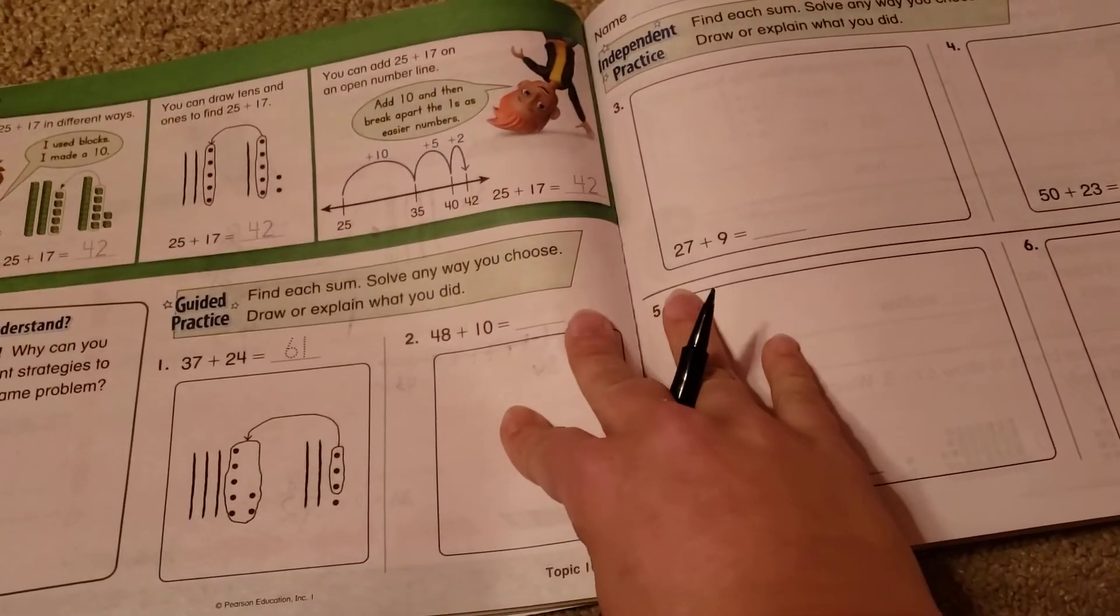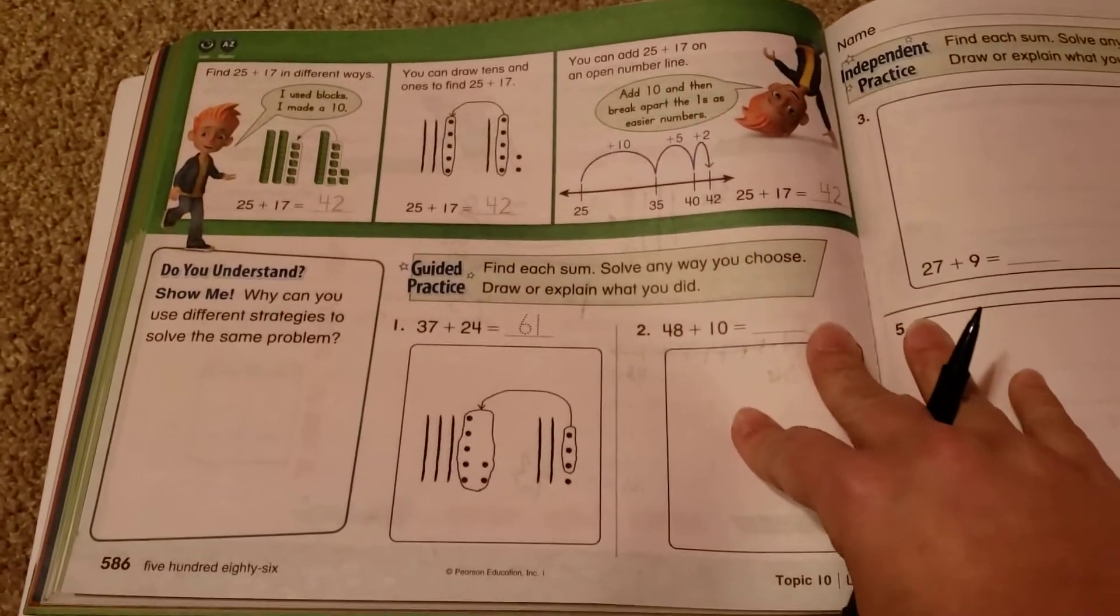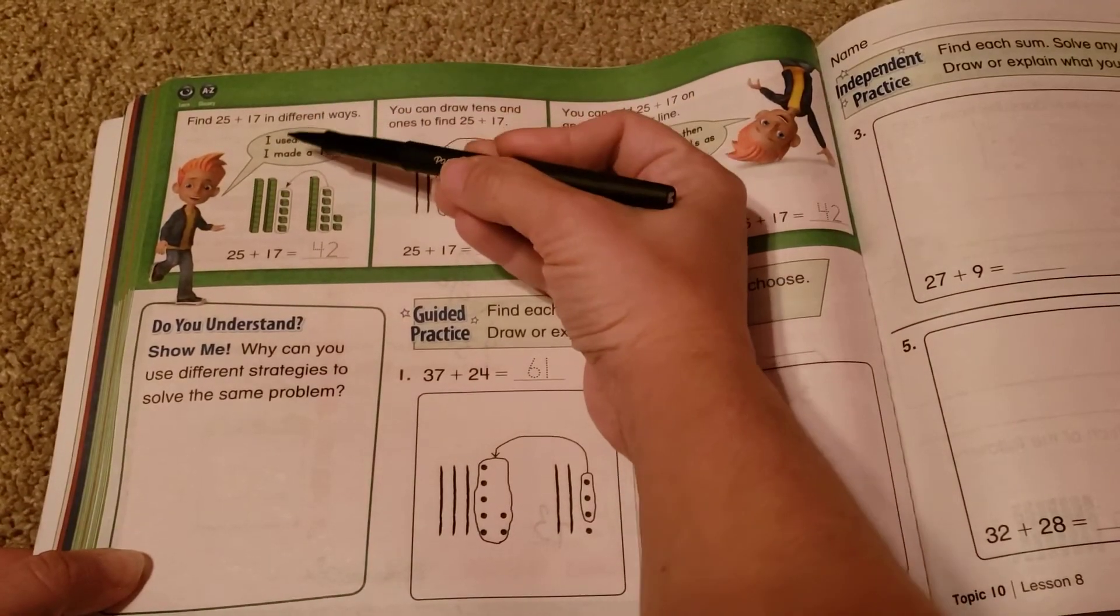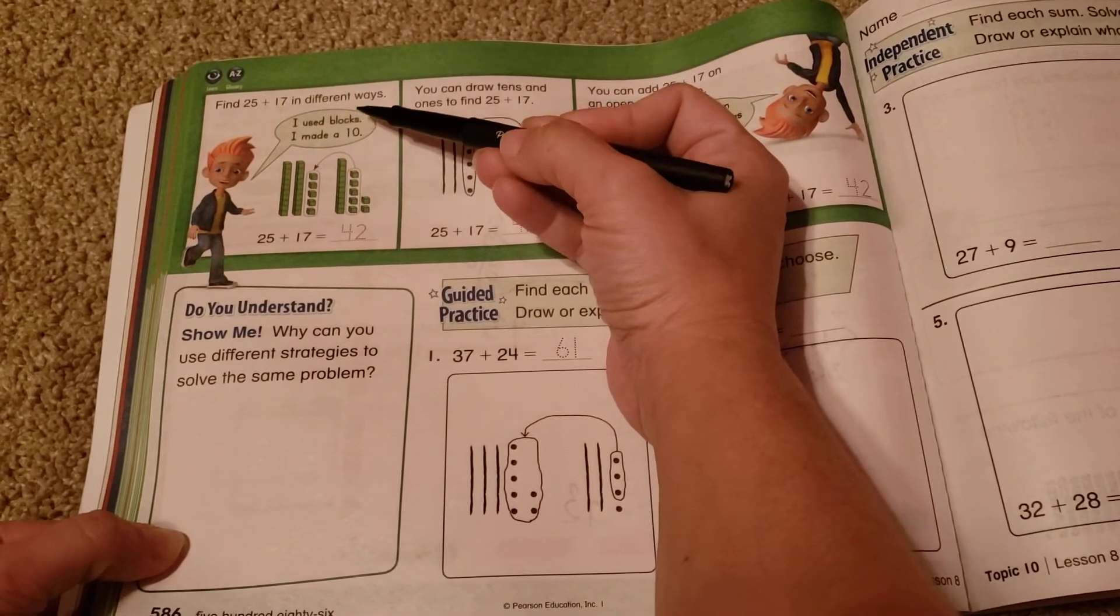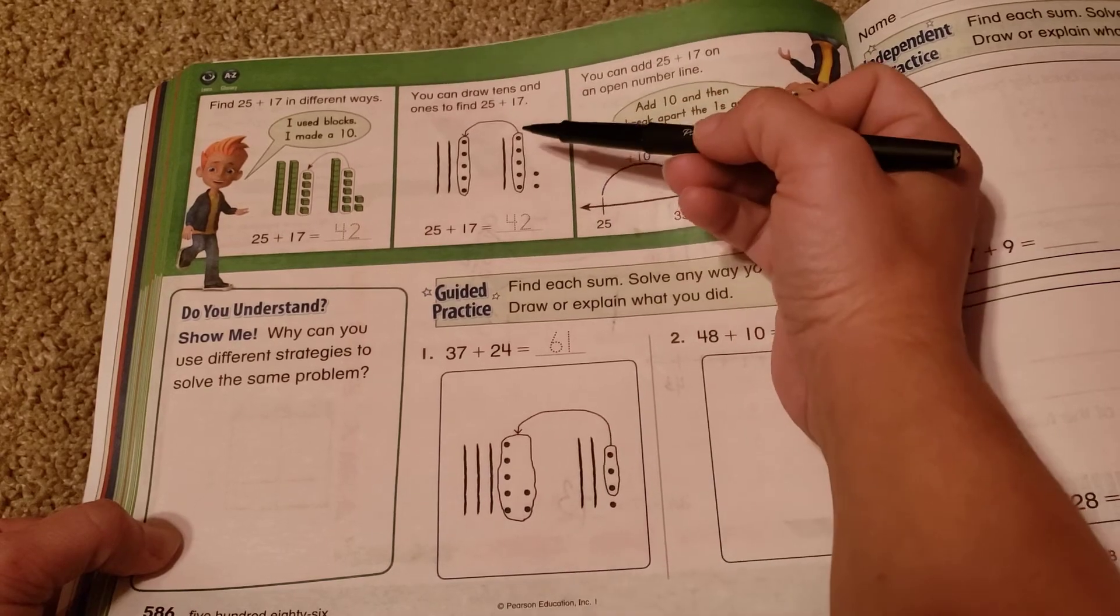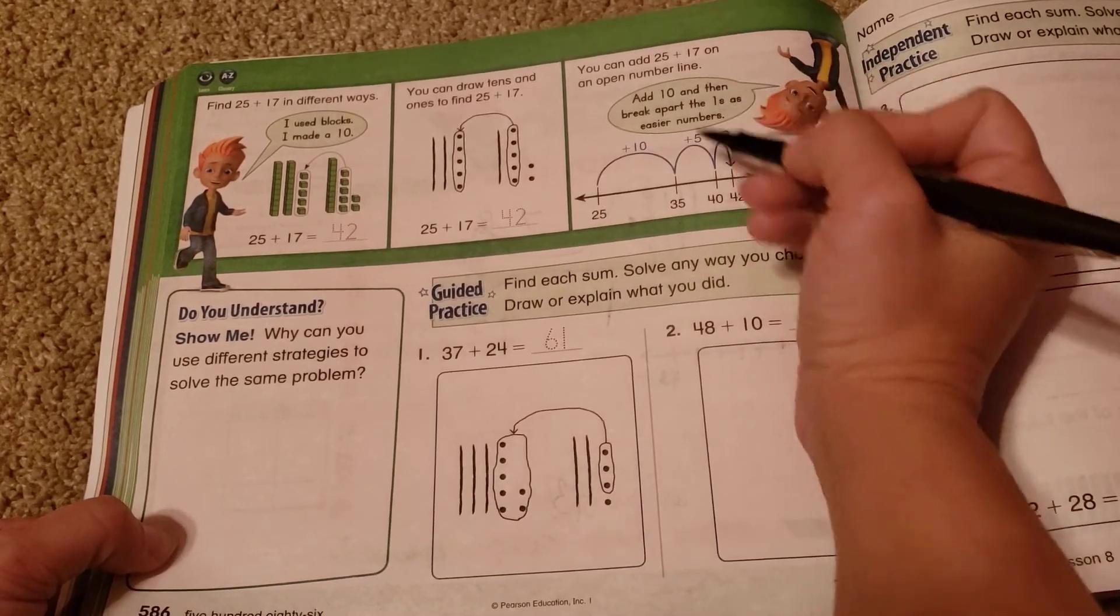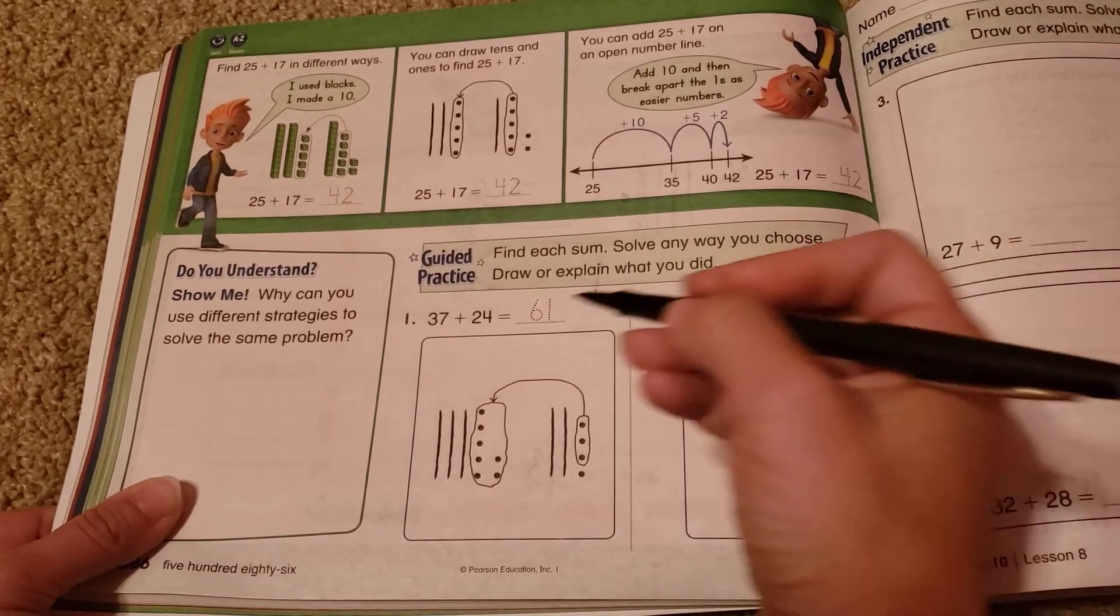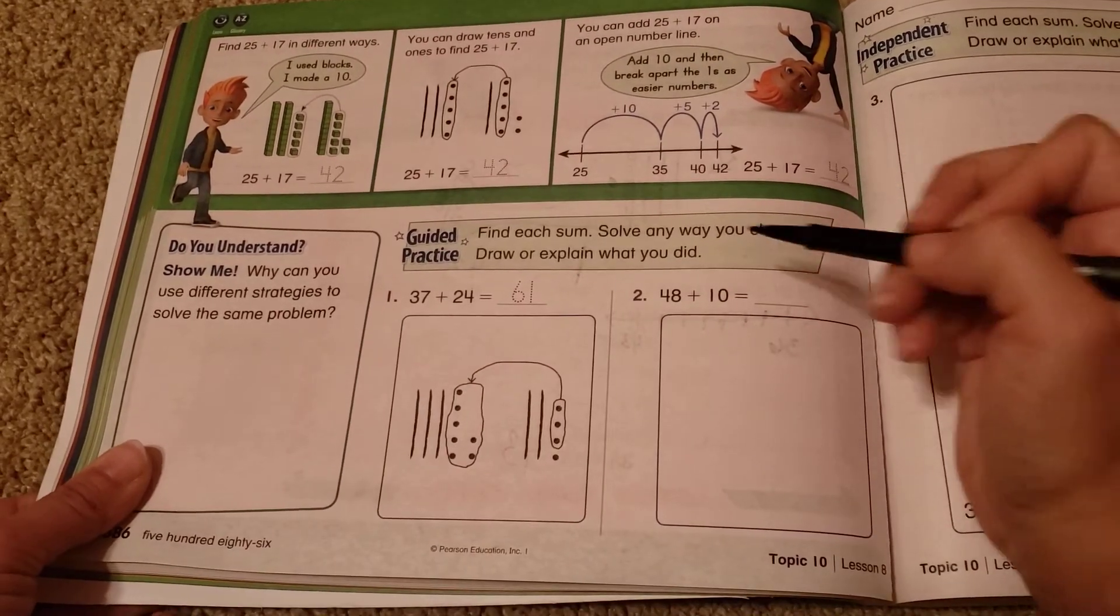If we flip over to page 586, you'll see the boy at the top of the page saying to find 25 plus 17 in different ways. I used blocks, I made a 10. You can draw tens and ones to find 25 plus 17. You can add them on an open number line like we just did on the other page. Number one they did for you. Number two, we'll do together.